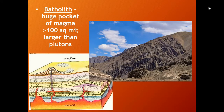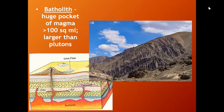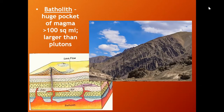One more term: batholith. A batholith is different from a pluton in that it is a huge, massive pocket of magma below the Earth's surface — greater than 100 square miles. Batholiths are larger than plutons and are typically the main source of magma that rises up to form plutons. Batholiths oftentimes, through erosion, reach the surface, and we can see beautiful rock formations of igneous rocks. You see one pictured here. In mountain building, you'll often see areas of batholiths.